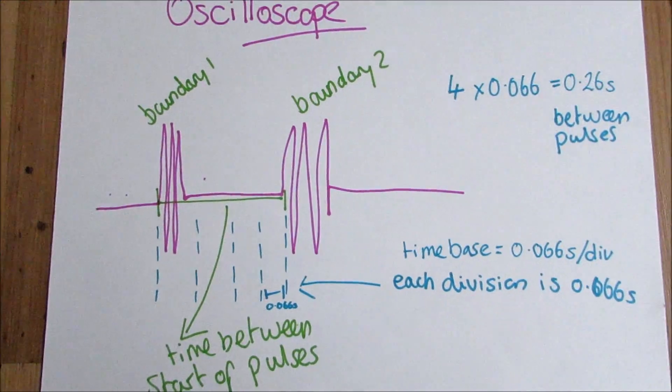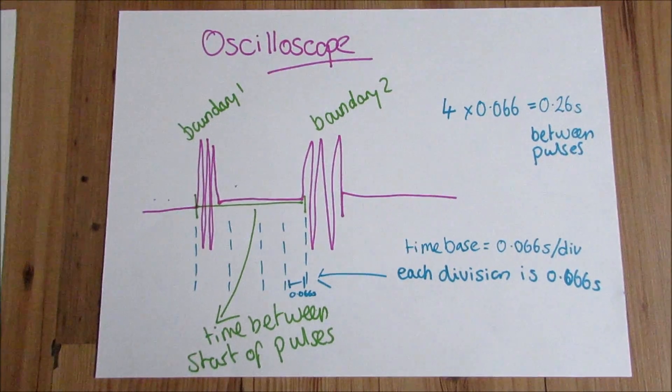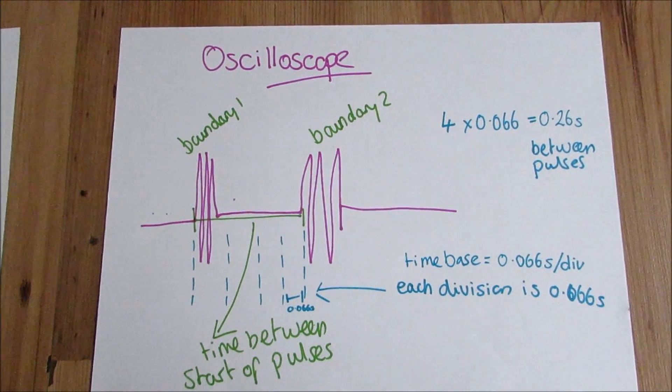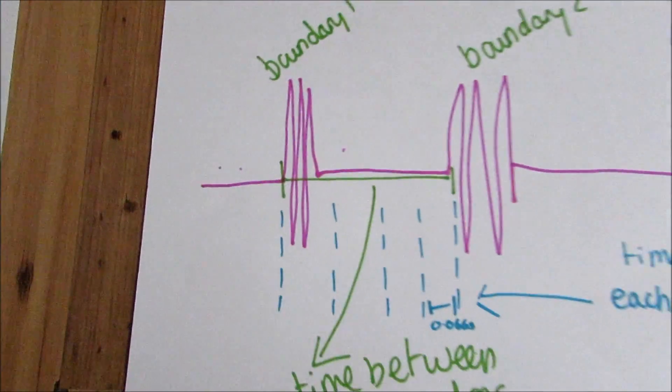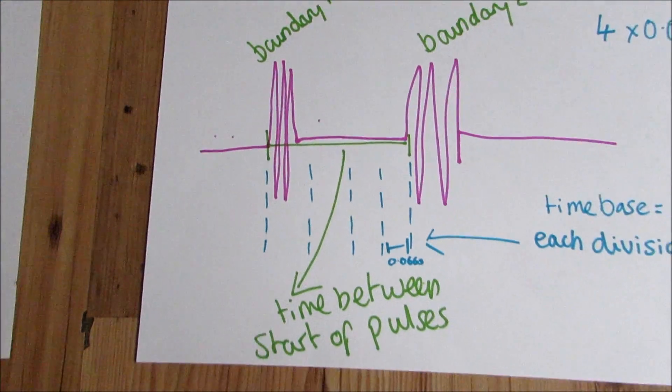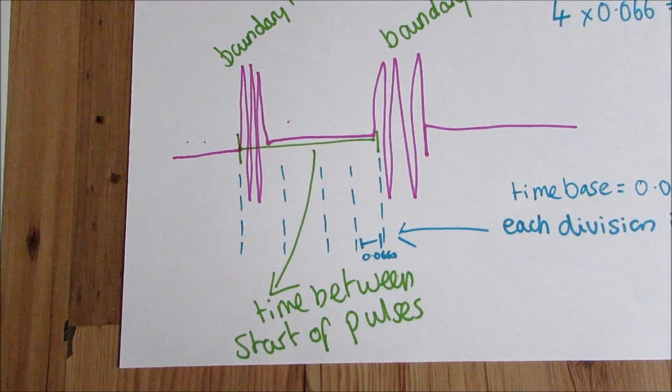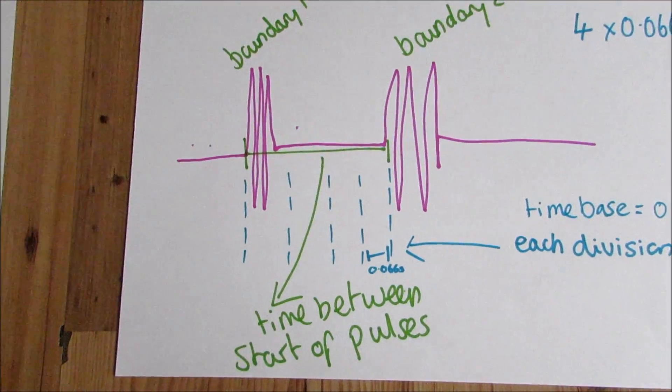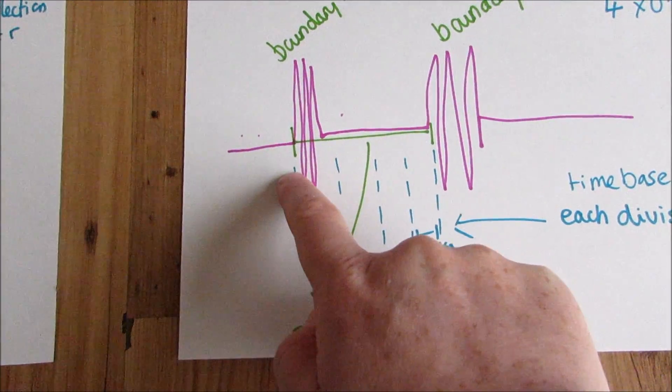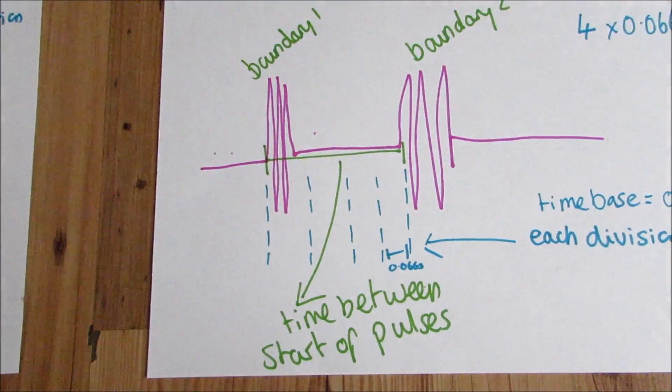This is what the trace will look like on what we call an oscilloscope. This is just a piece of equipment connected to the computer that will show you what your ultrasound looks like. We've got boundary one and boundary two. On the oscilloscope, there will be a grid, and this will be the time base. What we want to find is the time between the start of each pulse.